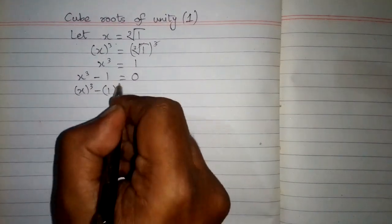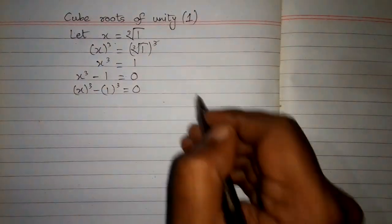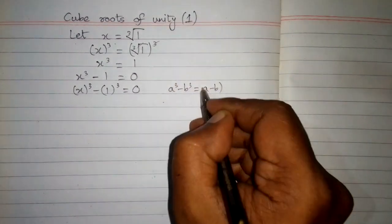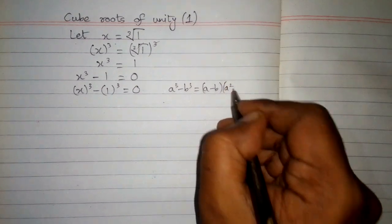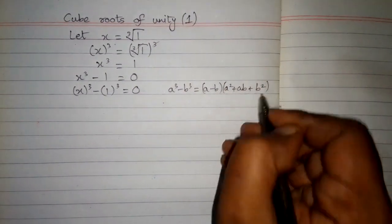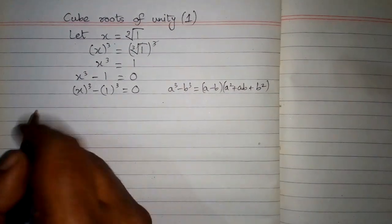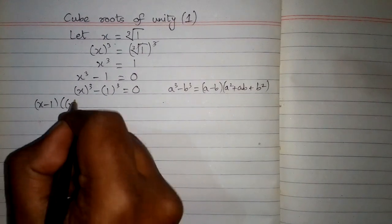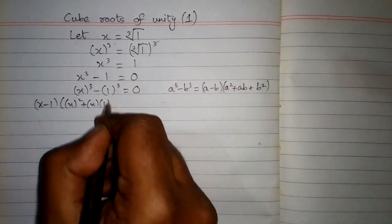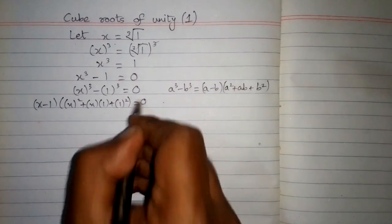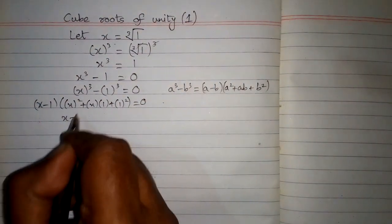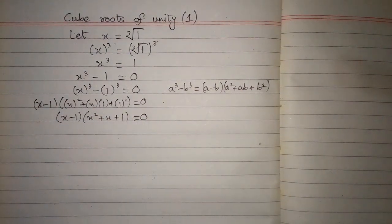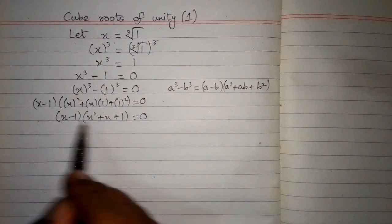This can be written as x cubed minus 1 cubed is equal to 0. Here we will use the formula a cubed minus b cubed equals a minus b, multiplied by a squared plus ab plus b squared. Applying this formula, we have x minus 1 times x squared plus x times 1 plus 1 squared equals 0, which simplifies to x minus 1 times x squared plus x plus 1 equals 0.